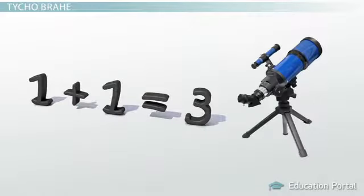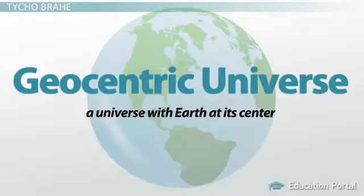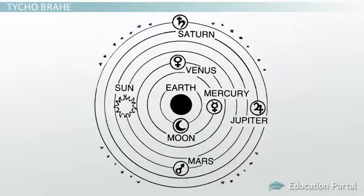Tycho studied law but was really passionate about math and astronomy instead. Unlike Copernicus, Tycho believed in a geocentric universe, a universe with Earth at its center, one where the Sun revolves around the Earth. But Tycho's idea of the geocentric universe was a bit different than Ptolemy's version.